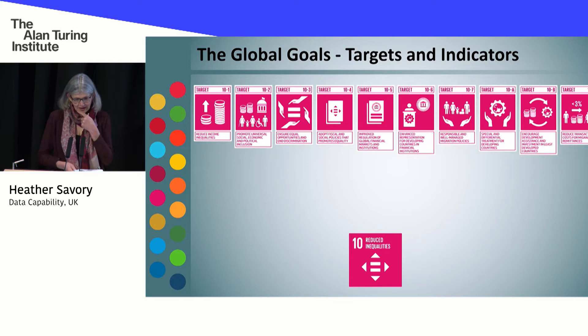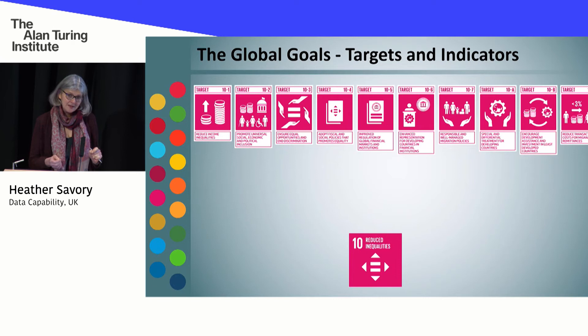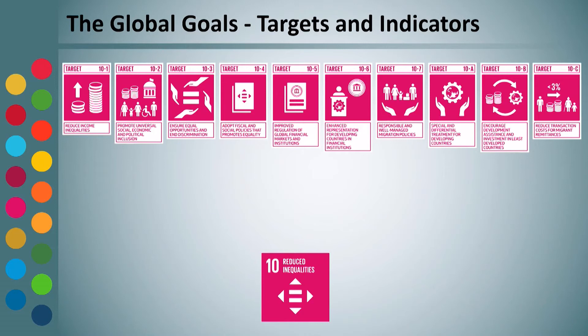Each of these targets is underpinned by indicators — it's really important that each target is backed up by something which is measurable and reportable. In some cases, because this is quite a huge undertaking, some indicators can be used towards multiple targets. Target 6 here — enhanced representation for developing countries — can also be used towards the peace and inequalities target. So this framework is being set up in quite a formal, rigorous, academic way to actually make sure that these goals can be reported against internationally.